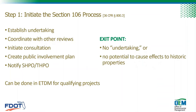In Step 1 we initiate the process by establishing the undertaking, identifying consulting parties, coordinating with other reviews, planning to involve the public, and initiating consultation with DHR. If the project qualifies for ETDM screening, Step 1 can all be done within ETDM. If you don't have a qualifying undertaking or it's determined that the undertaking has no potential to cause effects to historic properties, you record that finding in your project file and you're done — there's no need to complete the other steps.